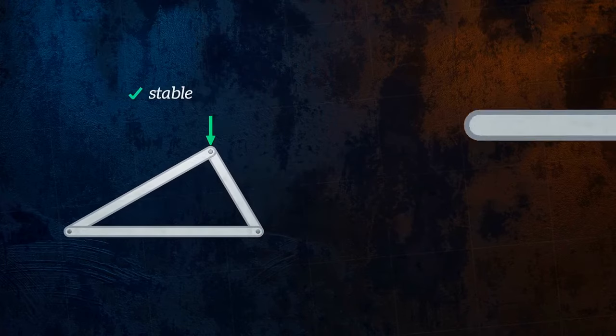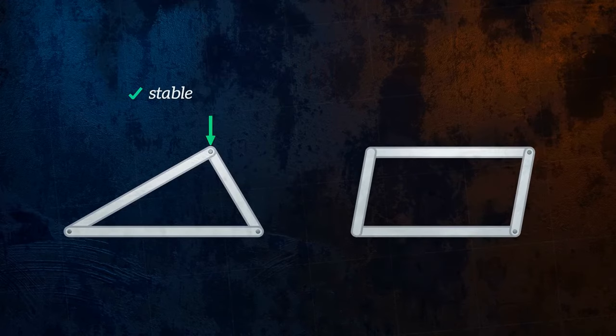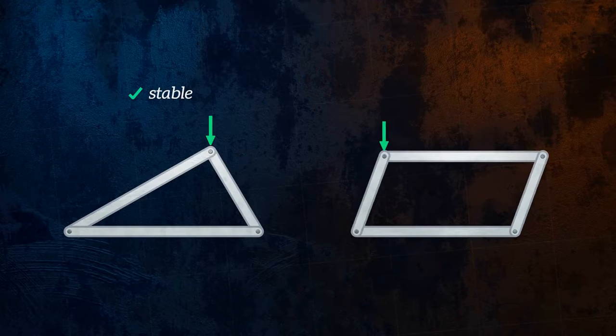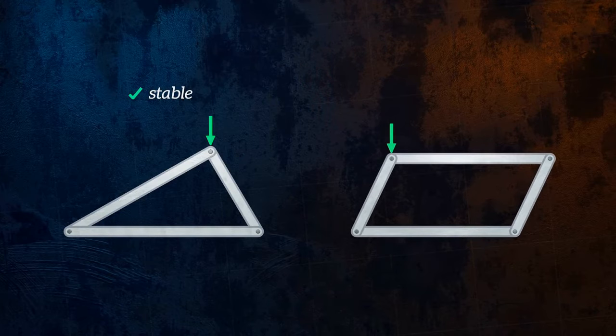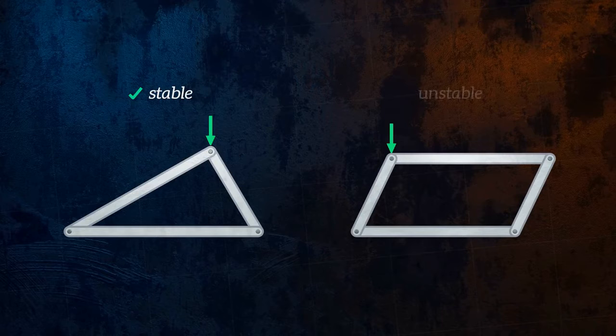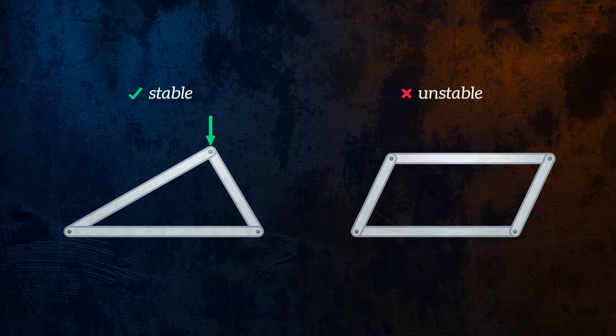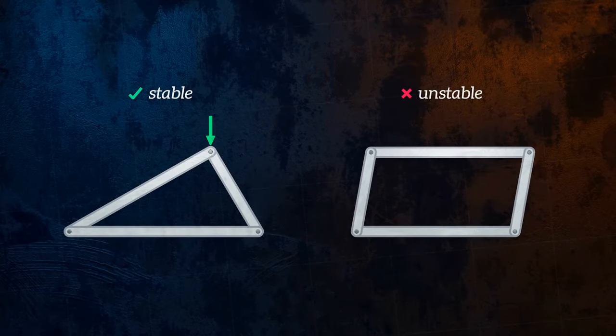Joining four members together does not form a stable structure. The angles between members can change without any change in the length of the members, and so using a four-sided shape as the base for building a truss would be a terrible choice. An easy way to stabilize this configuration is to add a diagonal bracing member to split it into triangles.